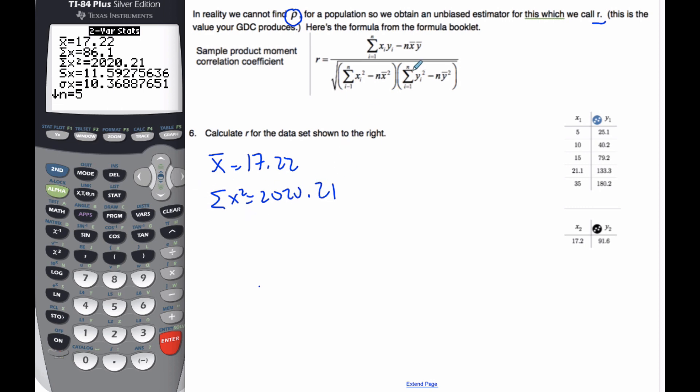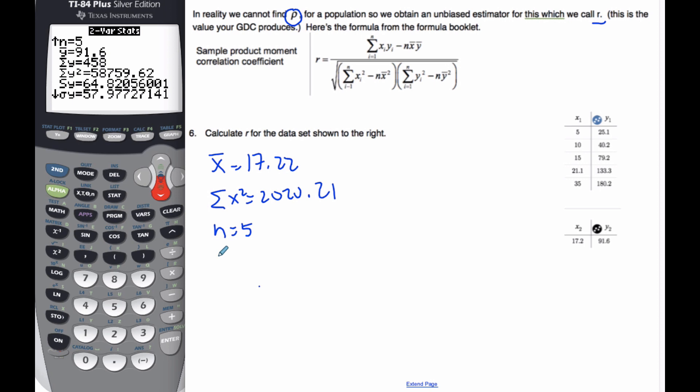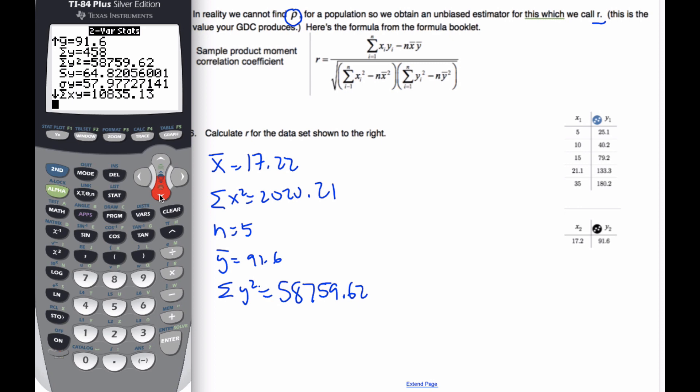I also need the fact that n equals 5. Scrolling down, I can see some more information. I know that y bar is equal to 91.6. The summation of y squares are equal to 58759.62. And if I go down, this is an important one,